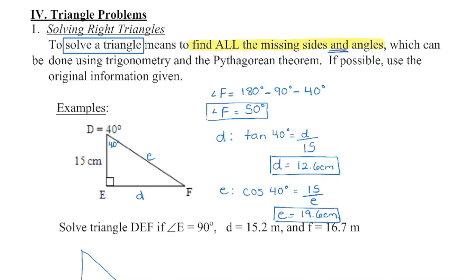From this angle, I know that this is my opposite and this is my adjacent. We can write on the side: 'some old horses can always help the other animals.' That's going to be my tangent ratio. So we're going to set it up: the tangent of that angle is the opposite side divided by the adjacent side. When you put that in your calculator, you get 12.6.